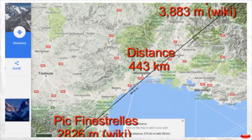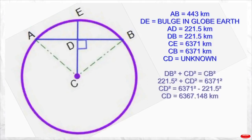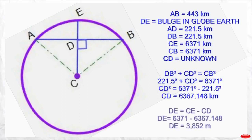Now let's calculate the bulge height between the two mountains on the fictional globe earth. AB is the distance between the two mountains: 443 kilometers. AD and DB are each half that distance: 221.5 kilometers. CE is the radius of the earth: 6371 kilometers. CB is also the radius of the globe earth, and CD is our unknown. Using the Pythagorean theorem, CD comes out to 6367.148 kilometers, giving an expected globe bulge of 3852 meters.